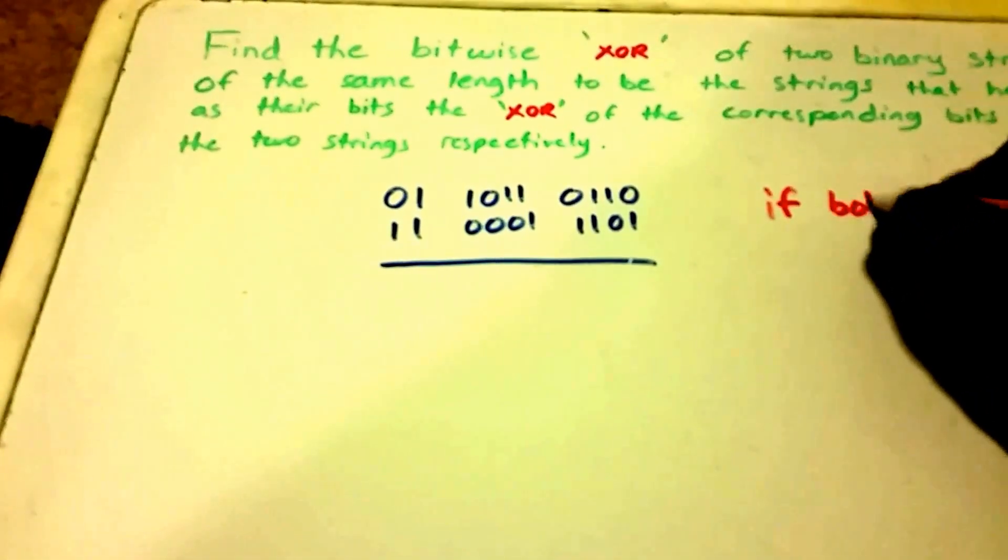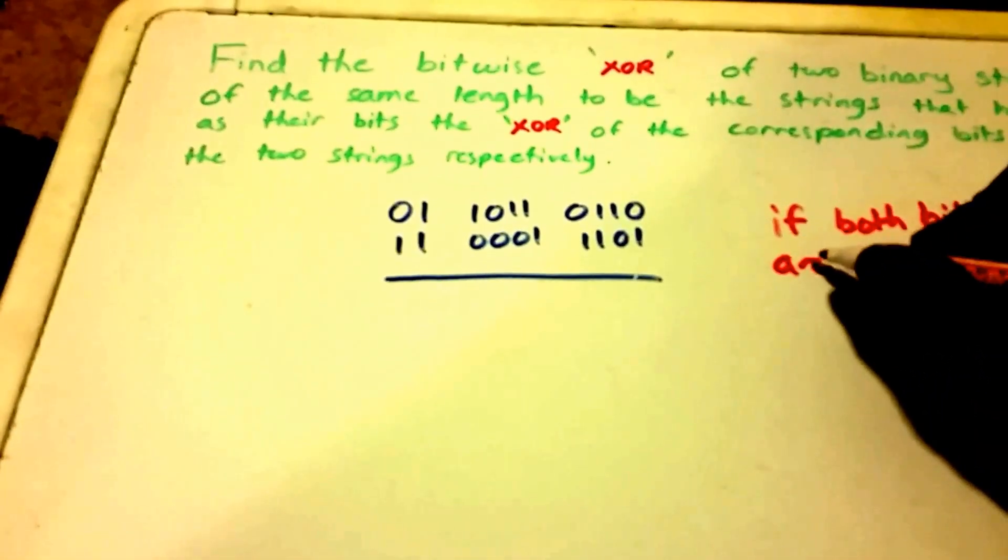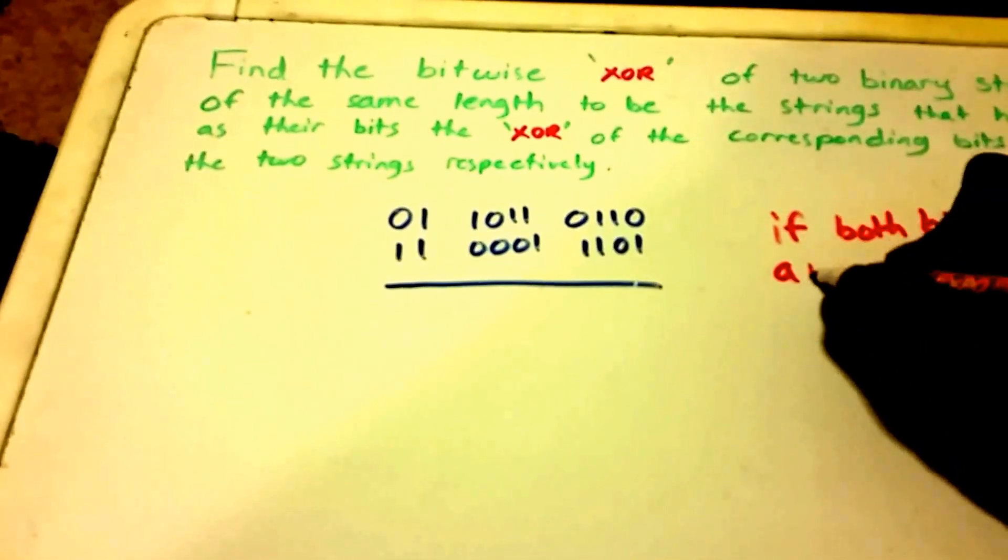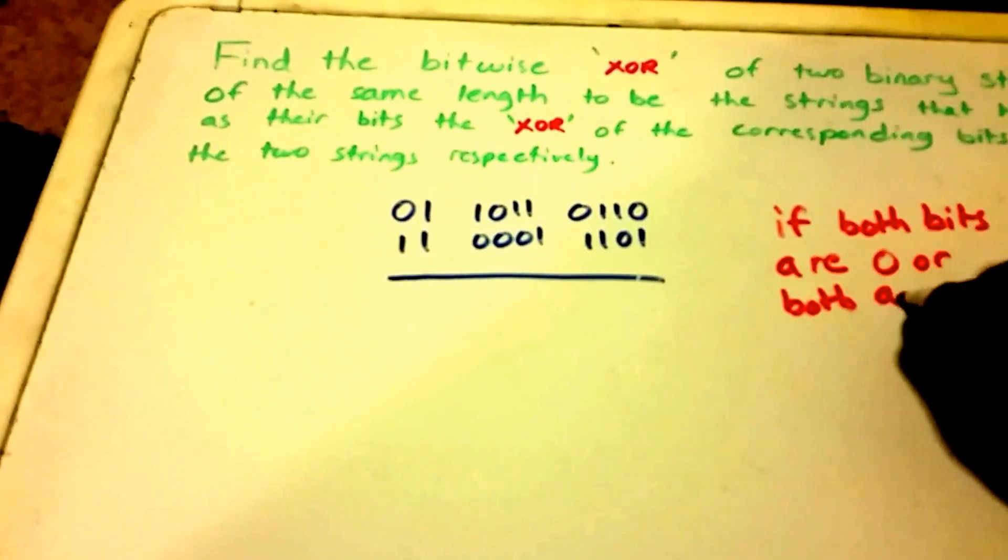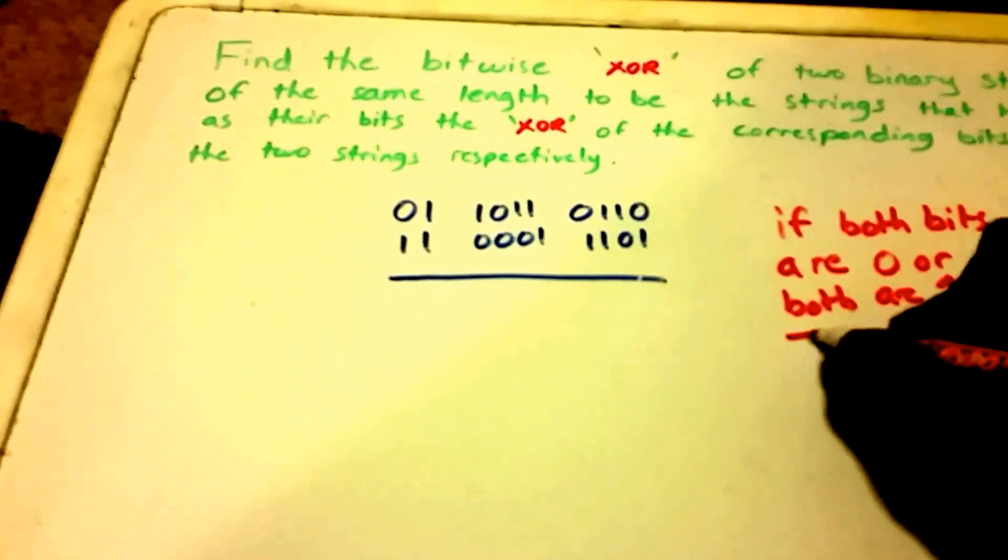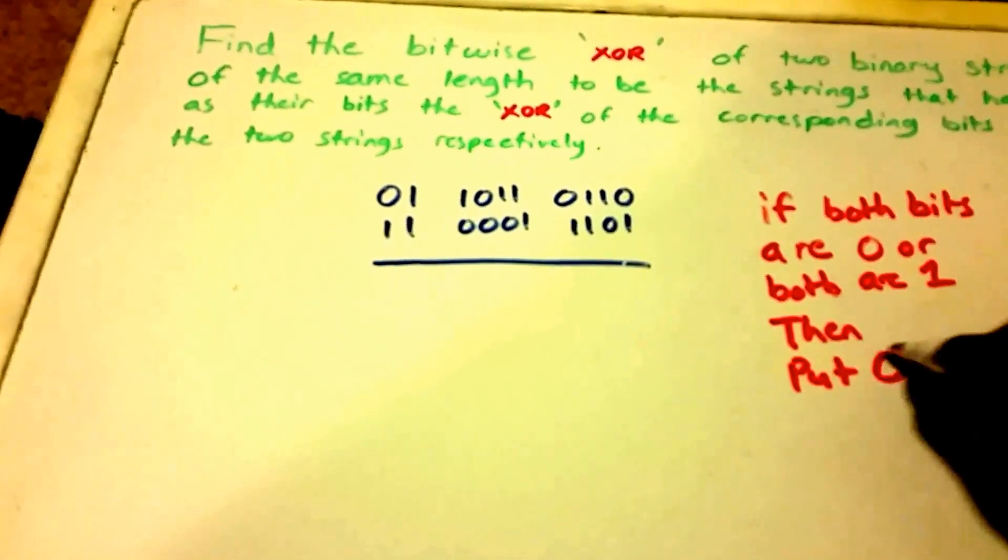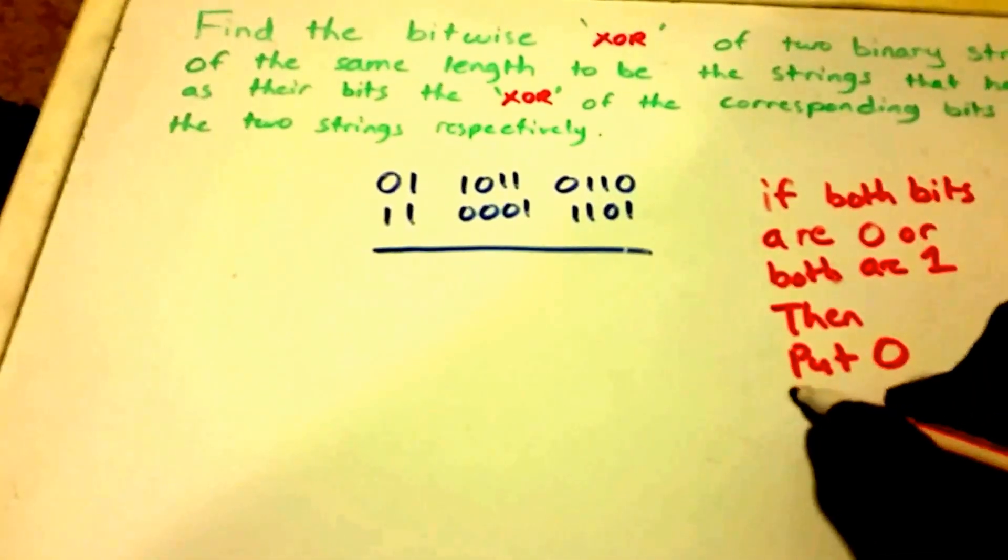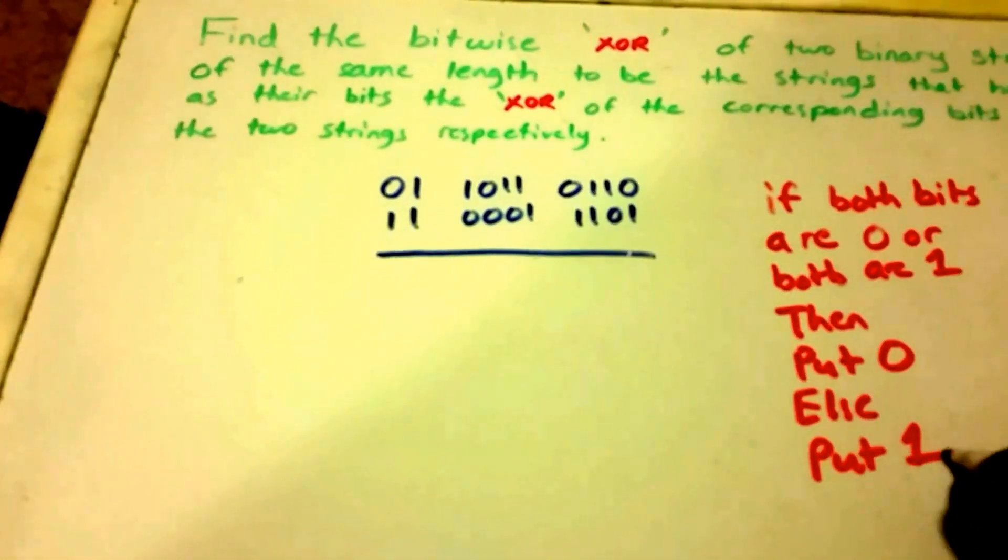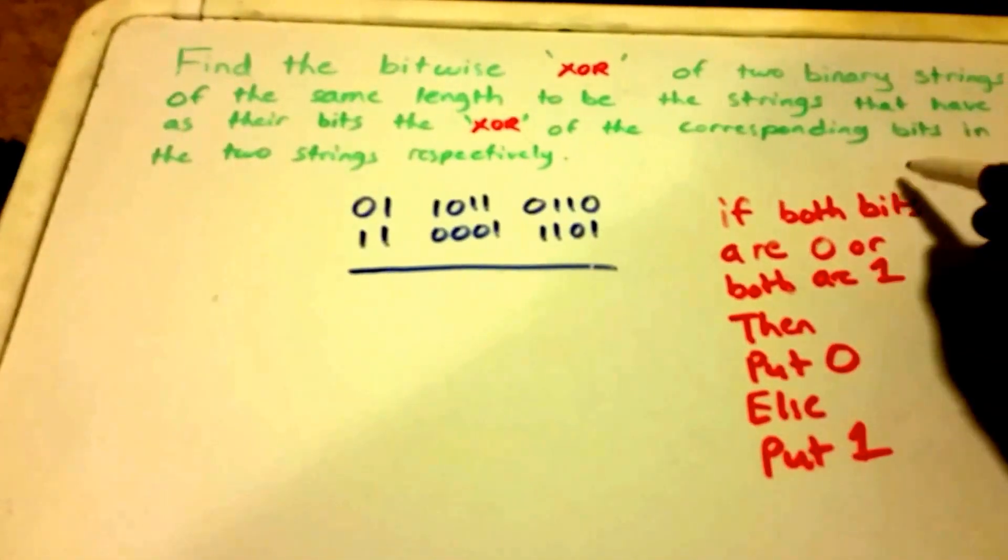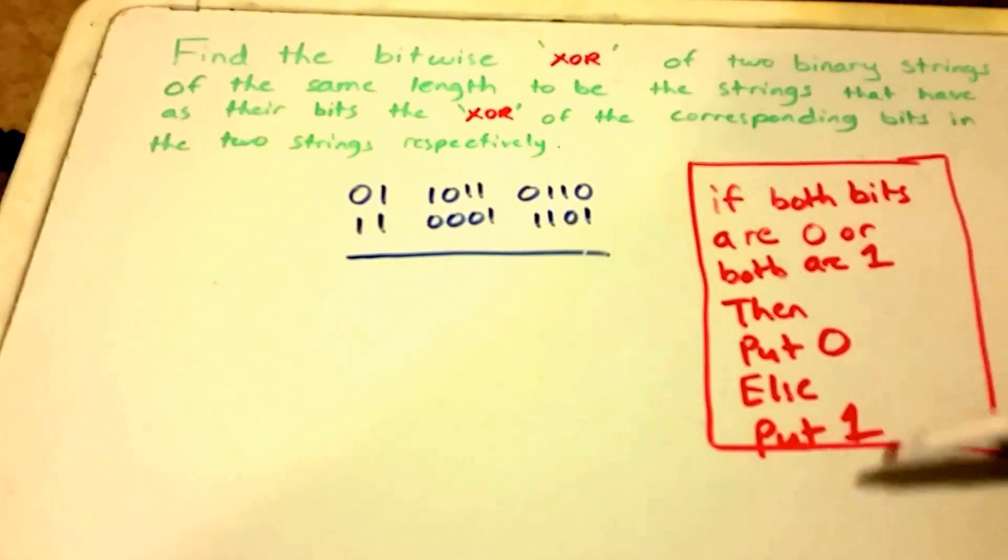if both bits are 0 or both are 1, then put 0. Else, put 1. Okay? So that's all we have to follow there.